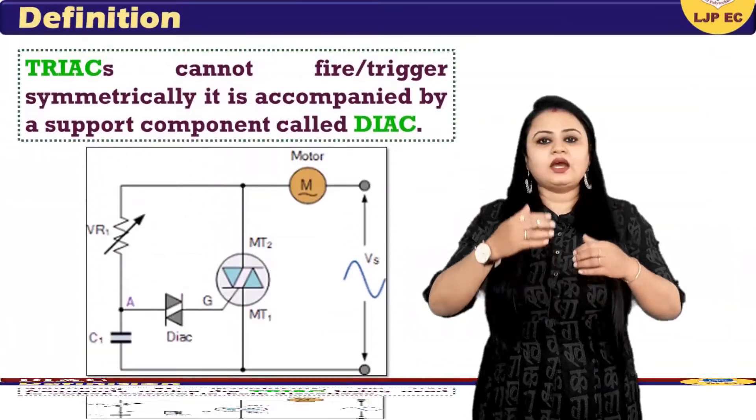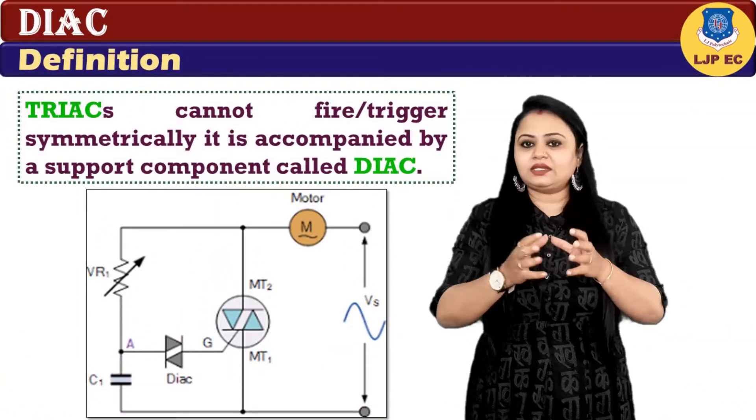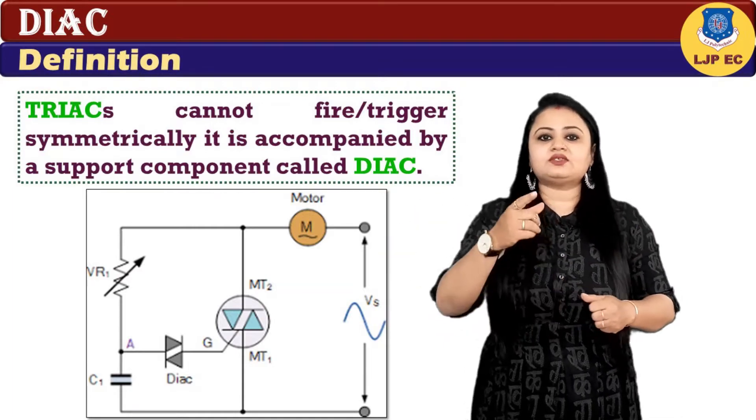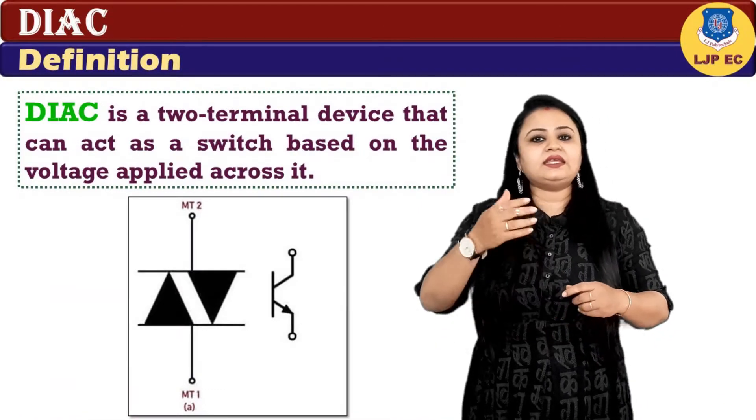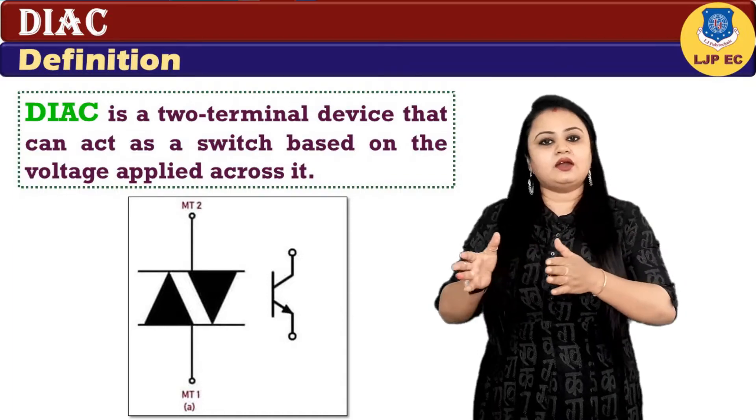Now since the TRIACs cannot fire or trigger symmetrically, it is accompanied by a support component called DIAC. DIAC is a two-terminal device that can act as a switch based on the voltage applied across it.